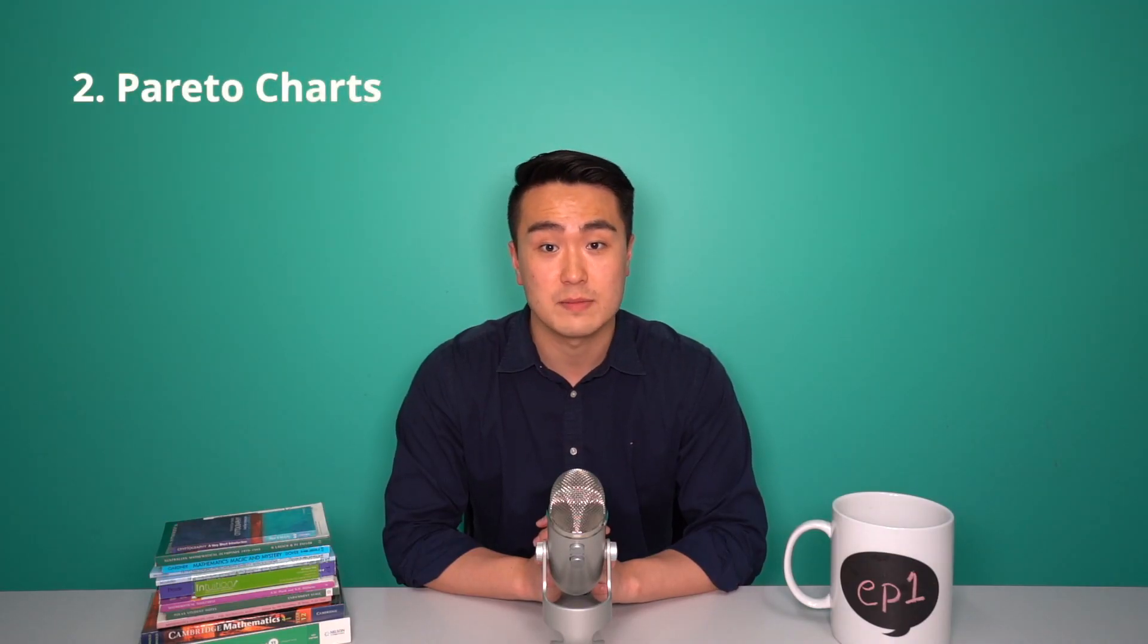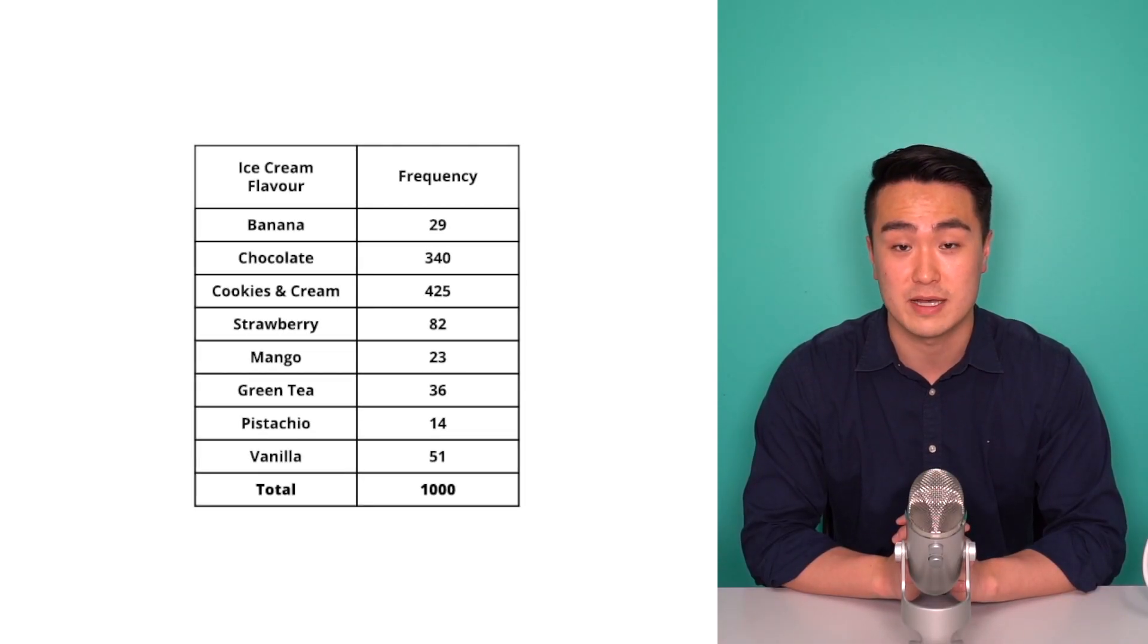If histograms and polygons are used to represent numerical data, we can use Pareto charts to represent categorical data. So let's go back to the same favorite ice cream flavor example. Here is our frequency table from our survey.